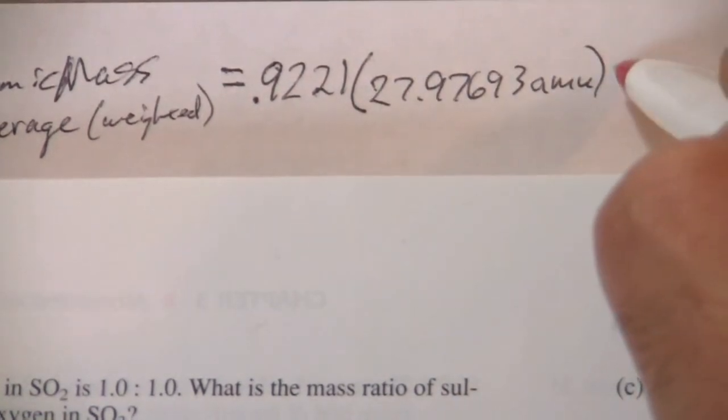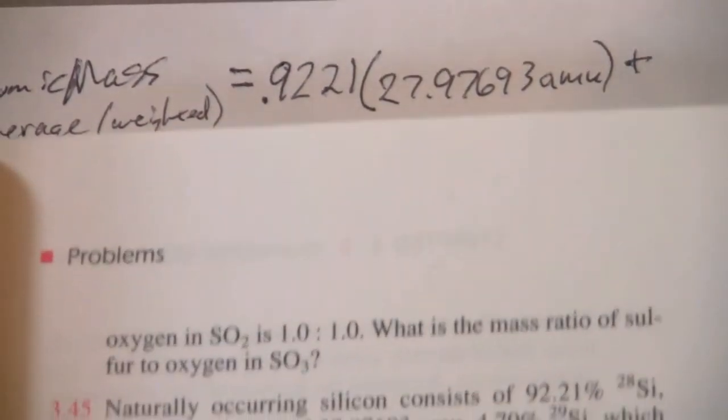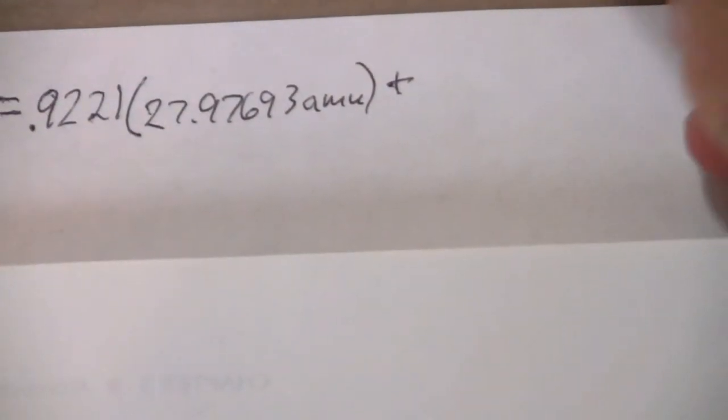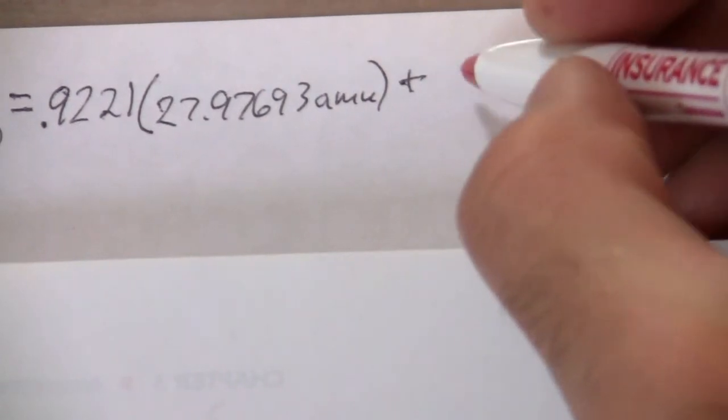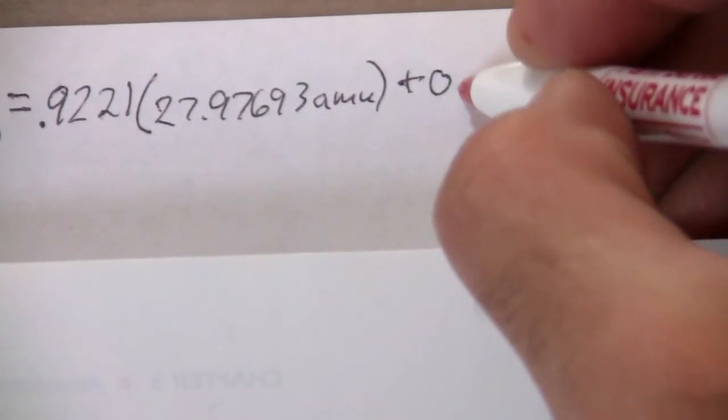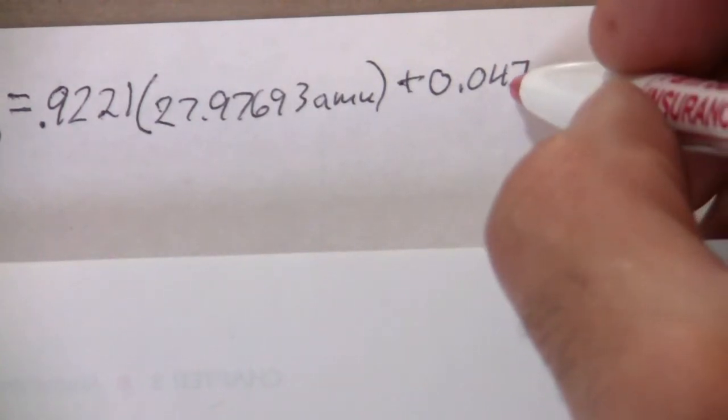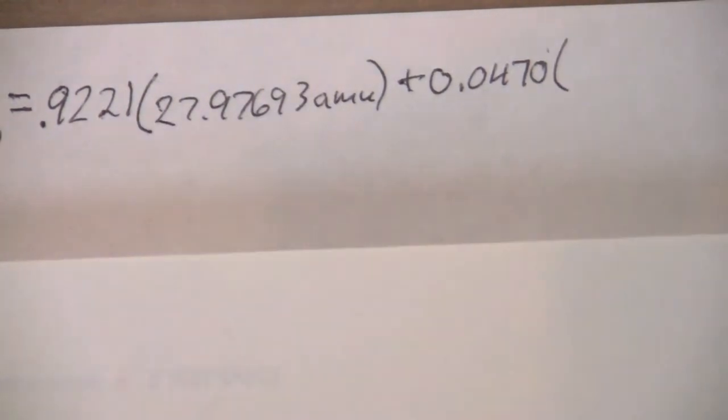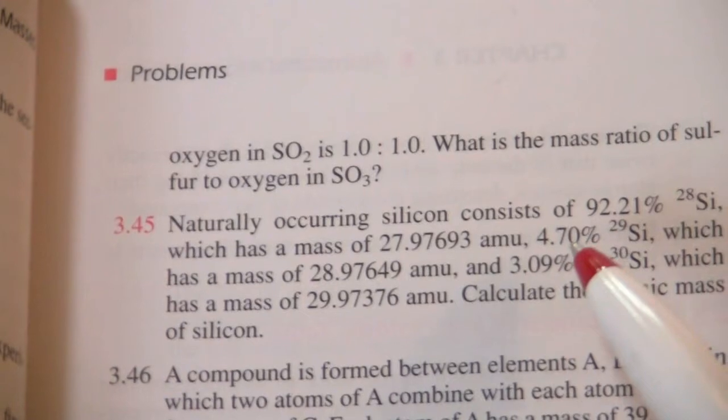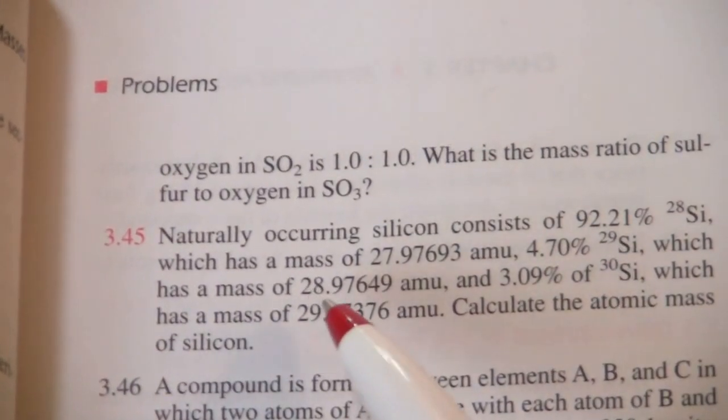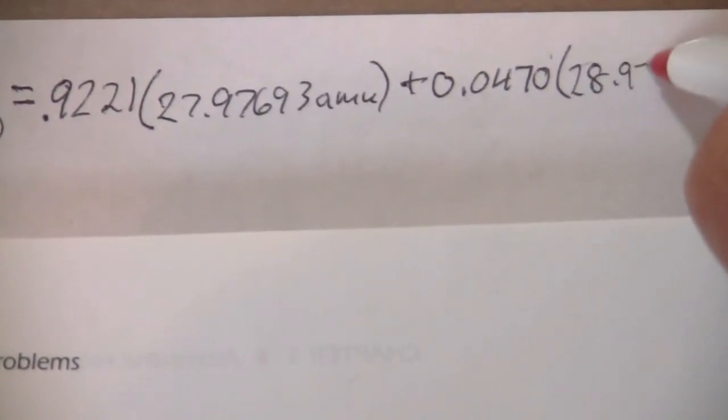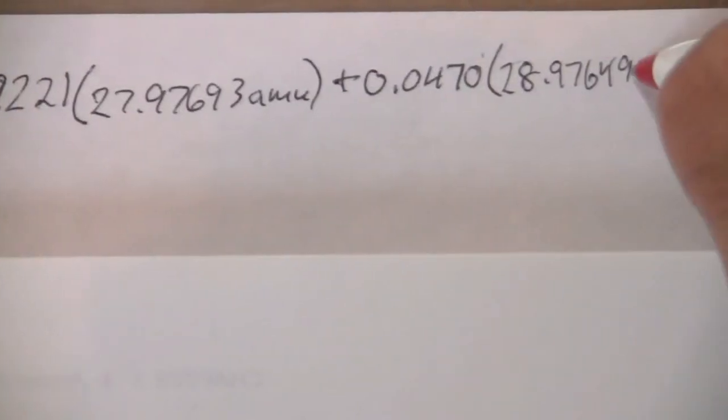So 92% is this, and then we have 4.7% is silicon-29. So here we have 4.7%. If we make that as a decimal, we have 0.047, 4.7%, you move the decimal two places to the left. And that's going to be times the mass of silicon-29, which is 28.97649.